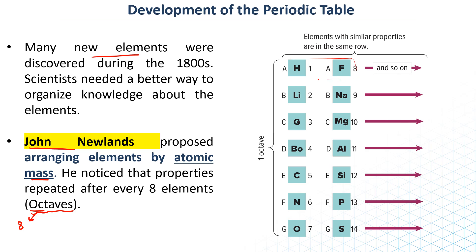What Newlands did was arrange elements by their atomic mass — going down and then continuing — and he noticed that within each row, elements with similar properties appeared at every 8th position. So he would count 1, 2, 3, 4, 5, 6, 7 — and that's one octave. Every 8 elements, the properties are repeated. This is how John Newlands organized his table, and he was famous for the Law of Octaves.